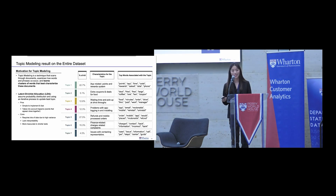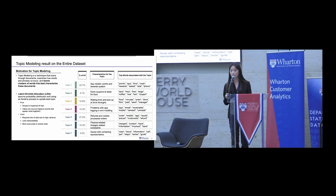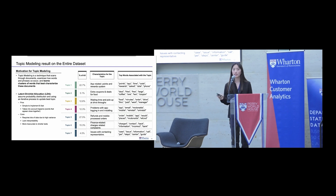Next, topic modeling. Topic modeling is a technique that scans through the entire document and sees how phrases and words co-occur to create clusters of words — or topics — that summarize the entire passage as a whole. The specific model we're using is Latent Dirichlet Allocation, or LDA. LDA takes in the entire dataset and identifies seven different topics that summarize it.